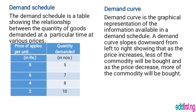We also have the demand curve. The demand curve is the graphical representation of the information available in a demand schedule. The demand curve slopes downward from left to right, showing that as price increases, less of the commodity will be bought, and as price decreases, more of the commodity will be bought.